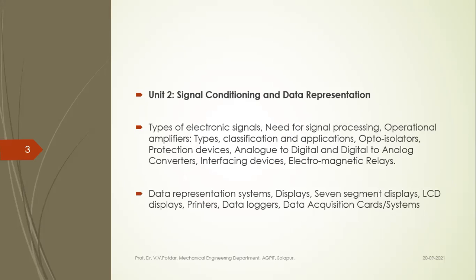In Unit 2 we'll have signal conditioning and data representation. Whatever signal we get from the sensors and transducers — how it is modified, how it is conditioned so as to make it suitable for the actuating elements. We'll study operational amplifiers, opto-isolators, A-to-D converters, D-to-A converters, and relays.